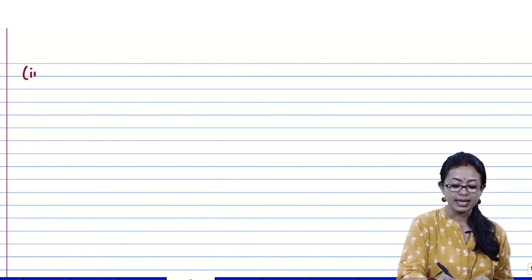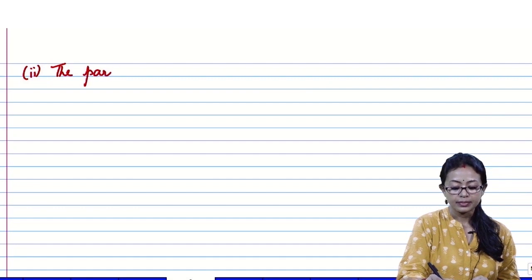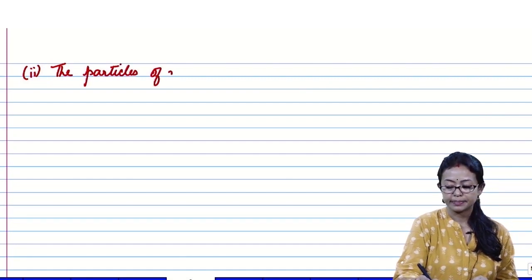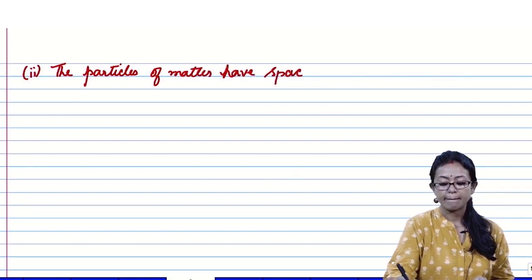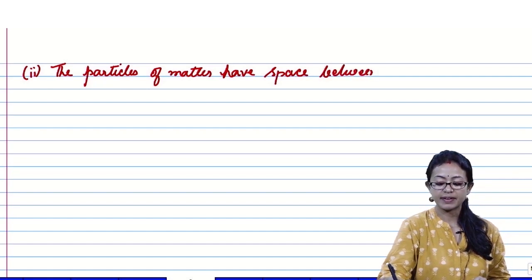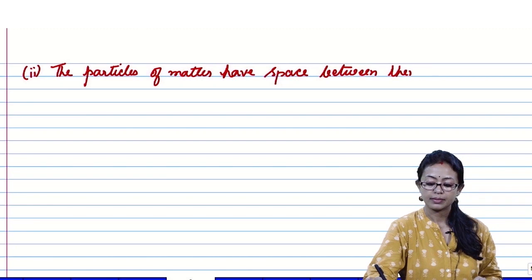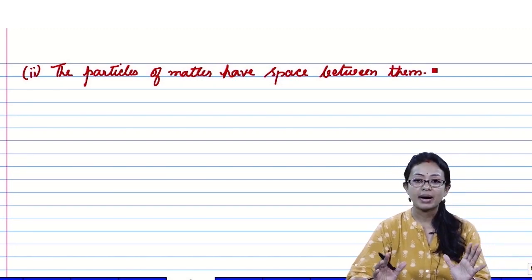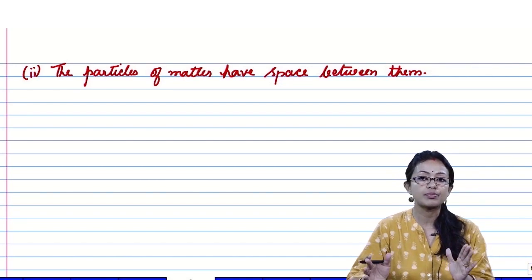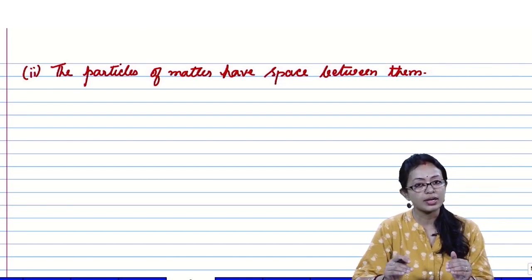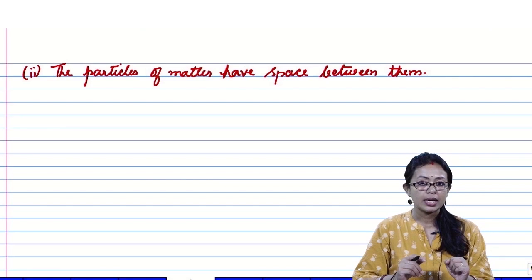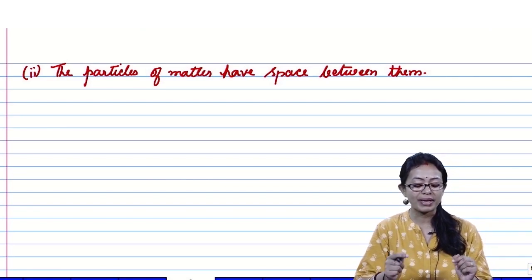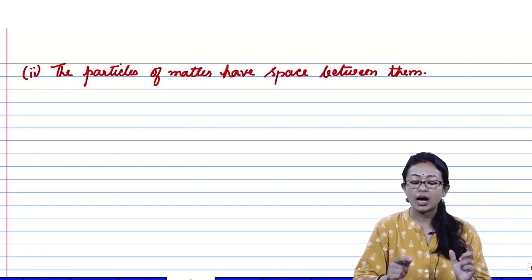The second characteristic of matter is that particles of matter have space between them. As we already proved, matter is not a continuous block but is made up of particles. Another important characteristic is that these particles are very minute, and there are spaces between them.